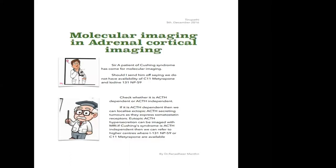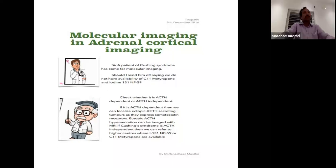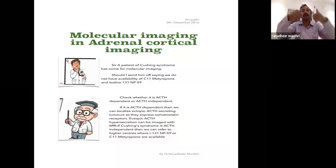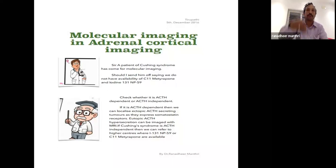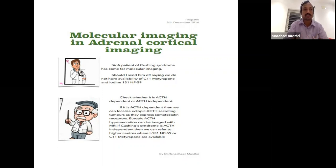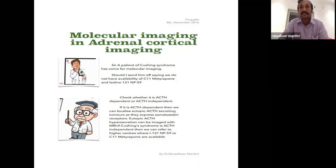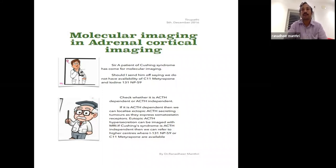On CT, the adrenal gland is inverted Y-shaped with a medial limb, lateral limb, and body. It is a small gland that controls our emotions — the fight-or-flight hormone — and also controls sodium and water balance through corticosteroids. Corticosteroids help fight crisis situations. The more you read about the adrenal gland, the more interesting it becomes.